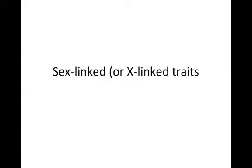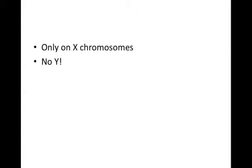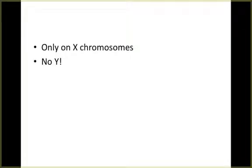All right folks, the last part of the Punnett squares we're going to do in the genetics unit involves sex-linked or X-linked traits. As you may see on your screen, these traits do not appear on autosomes — autosomes are the other 22 pairs of chromosomes. We're looking at the sex chromosomes, and primarily the X chromosome, which is why they're called X-linked or sex-linked. Sex-linked traits appear on the X chromosome, so we indicate them with X.